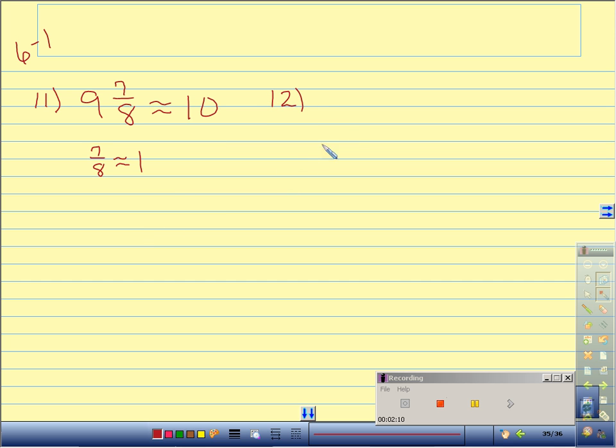Number 12, 4 and 3 eighths. The fractional part, 3 eighths, fits the description when the numerator is about or close to one half of the denominator. In this case, 4 would actually be a half, but 3 is very close. So the 3 eighths would benchmark to a half. So 4 and 3 eighths is approximately 4 and 1 half when using estimation with fractions and mixed numbers.